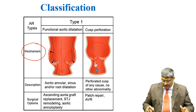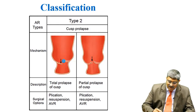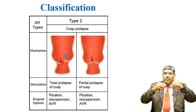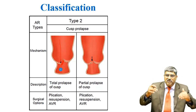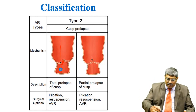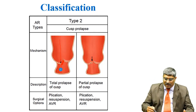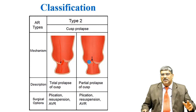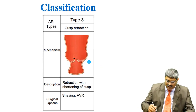This is Type 1. Coming to Type 2, the cusp is totally prolapsed so they do not approximate properly. Because it is not approximating properly, the blood from the aorta goes back into the left ventricle. Or it can be a partial cusp prolapse. This is Type 2.